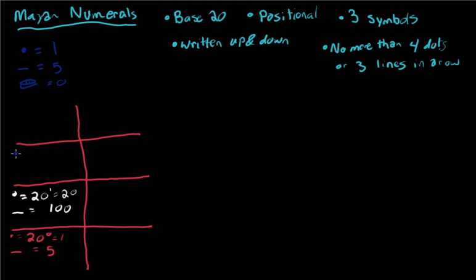We move up again, the dot now equals 20 to the second power which is four hundred, and the line equals five times that amount or two thousand. And we'll go one more time just to make sure that you're getting it.